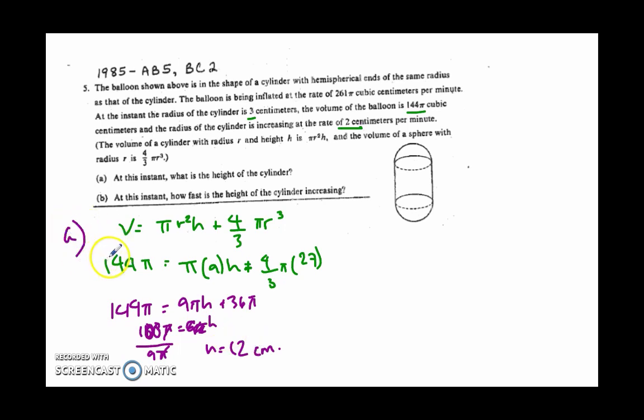Part B is how fast is the height of the cylinder increasing at this exact moment. So now we have to differentiate volume. We get dv dt equals, and we are going to need to do a product rule here.